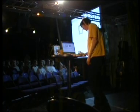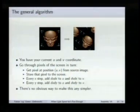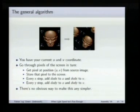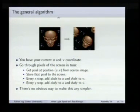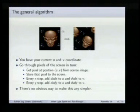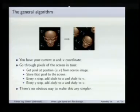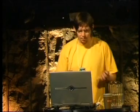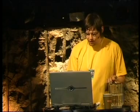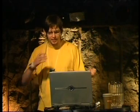You have just a texture and you rotate and zoom it. You have your current U and V coordinate at some pixel — you usually start at the top pixel — and then you go through the pixels of the screen in turn by lines, for example horizontal lines. You get the pixel at the current position, then advance that position by some delta, which is the same for every pixel. So every X step you add this delta to your U and V coordinates, and every Y step you have different deltas but still add them to your coordinates.